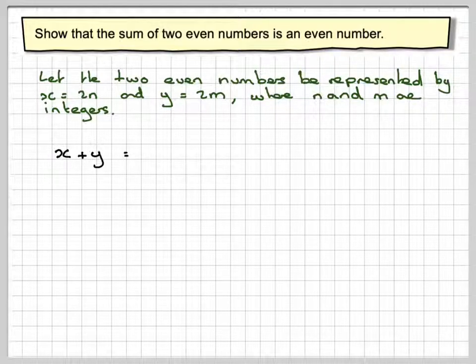If we add them together, x + y will be 2n + 2m. Now, there's a common factor of 2.